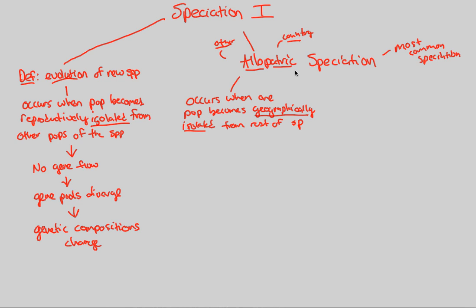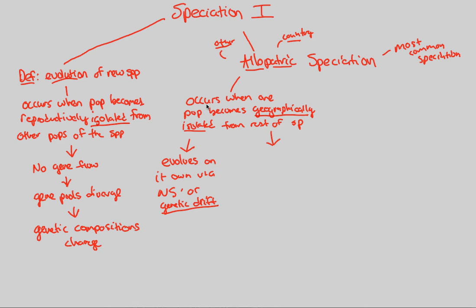Geographic isolation is going to cause this new isolated population to evolve on its own, because it's now separated. This isolation will cause evolution via either natural selection or, as we learned in microevolution, genetic drift. Genetic drift acts on small populations — this is when one small population becomes geographically isolated. Thus, either natural selection or genetic drift can act on it.